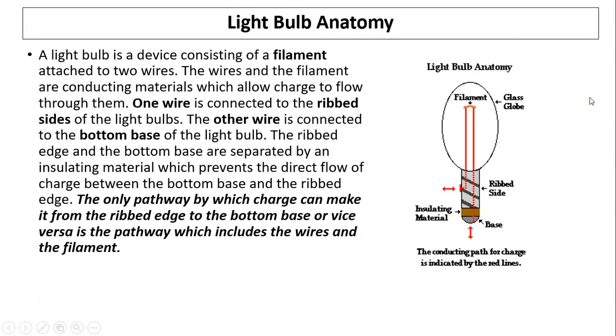Light bulb anatomy: A light bulb is a device consisting of a filament, as you see in the diagram here, attached to two wires. The wires and the filament are conducting materials which allow charges to flow through them.